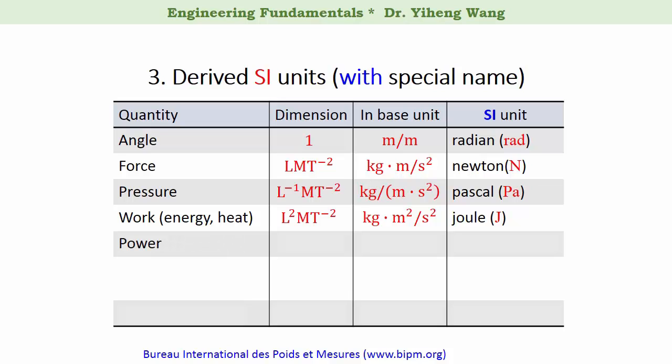Power is the time derivative of work, therefore its dimension is the dimension of work over time. This is its unit given in base units, and it has the name of watt.